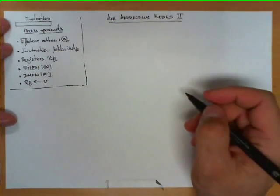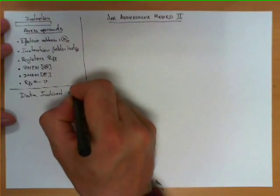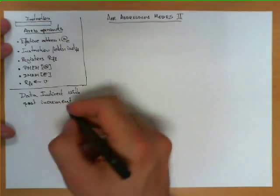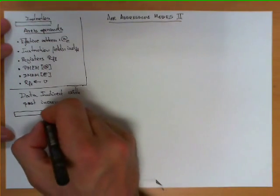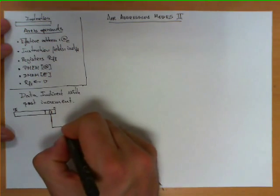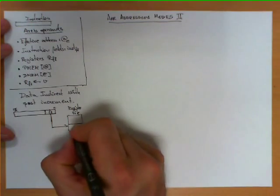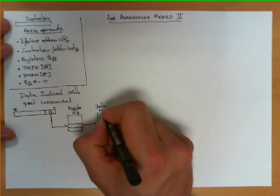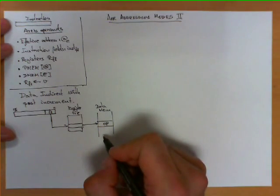The first addressing mode is called Data Indirect With Post Increment. When an instruction has this addressing mode, the instruction — typically 16 bits — has one field, F1, that encodes one of the registers in the register file. We go to that register, and in it, what we access is the address we use to go to the data memory, where the operand is found. What we have described so far is exactly the addressing mode known as Data Indirect.